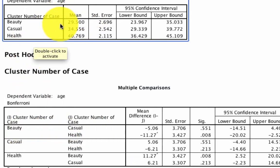And if we look at the ages, we see that the beauty individuals are the youngest, and the health individuals are the oldest, and the casual individuals are somewhere in the middle. So at best, what we can say is that those individuals in the beauty cluster are younger than those individuals in the health cluster.